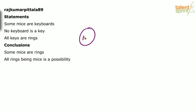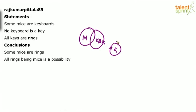New problem. Some mice are keyboards. No keyboard is a key. All keys are rings. Keyboards and keys will not touch each other. So this is the basic diagram: some mice are keyboards, no keyboard is a key, all keys are rings.